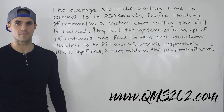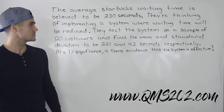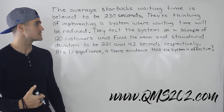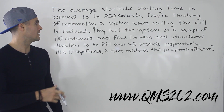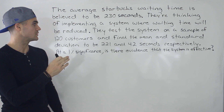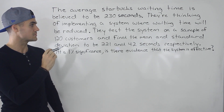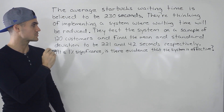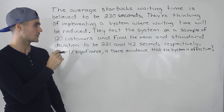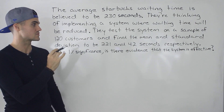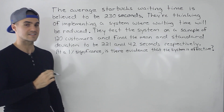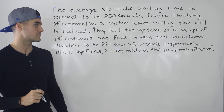Welcome back everyone. Moving on with hypothesis testing to another example. The average Starbucks waiting time is believed to be 230 seconds. They're thinking of implementing a system where waiting time will be reduced. They test the system on a sample of 120 customers and find the mean and standard deviation to be 221 and 42 seconds respectively. At 1% significance, is there evidence that the system is effective?